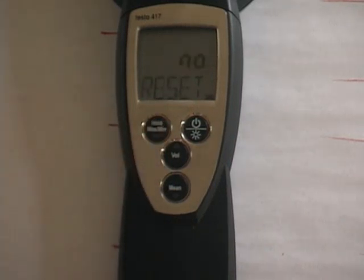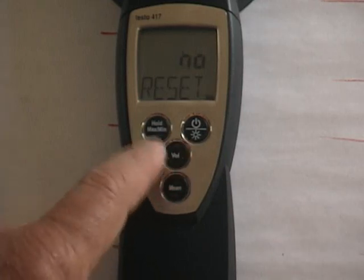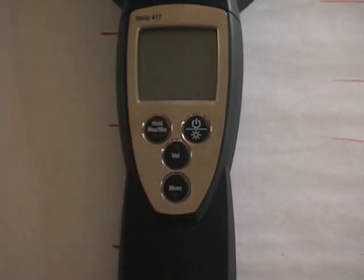Then we toggle to reset. If you want to reset this to factory settings and start all over, you would toggle this up to yes. We don't want to do that, so we're going to toggle on through. That's your submenu and we're back to the main screen with feet per minute and the temperature in Fahrenheit.